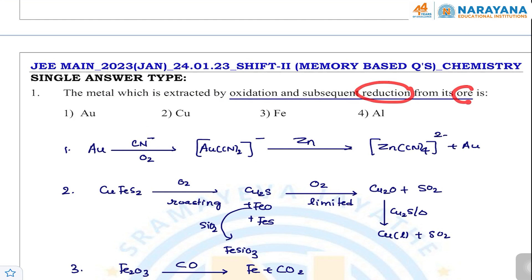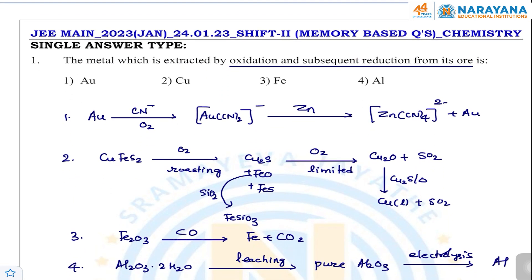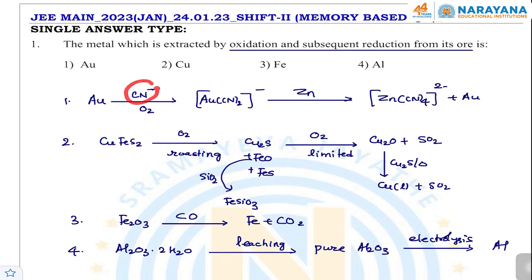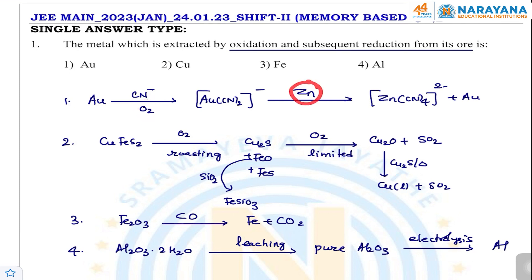The options are gold, and others. Gold is extracted by the cyanide process where it is leached with cyanide solution in the presence of O2, forming the complex [Au(CN)2]⁻, which is further reduced by zinc to give gold metal. In this process, cyanide acts as a complexing agent, O2 acts as the oxidizing agent, and zinc acts as the reducing agent. So gold extraction involves both oxidation and subsequent reduction.